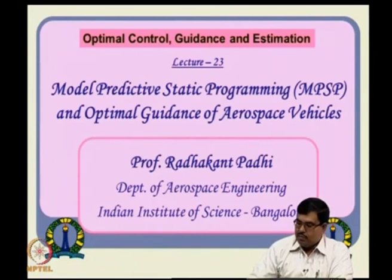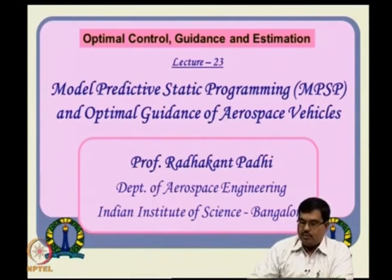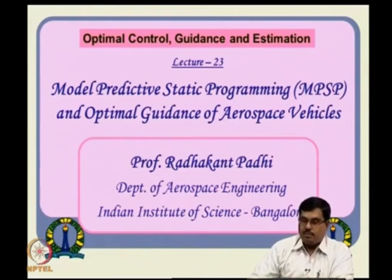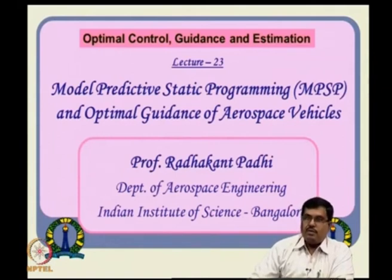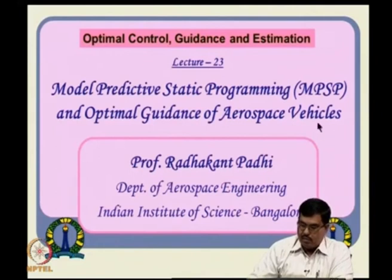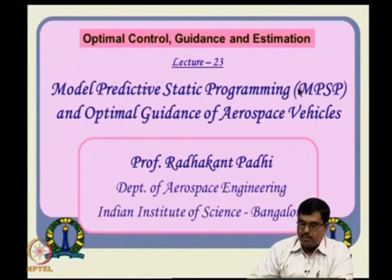Essentially, any guidance problem is a trajectory optimization problem, which means it should ideally be formulated as an optimal control problem. But because of the curse of dimensionality or curse of complexity, these are typically never used online. However, as mentioned, there are several evolving methods trying to overcome that, and one of them is model predictive static programming. So let us see what it is.